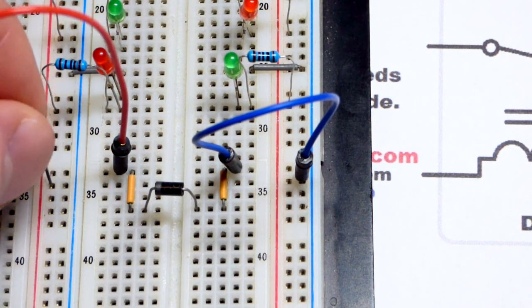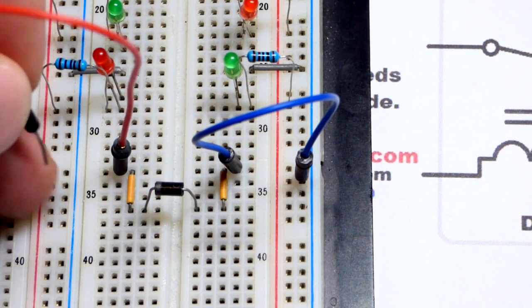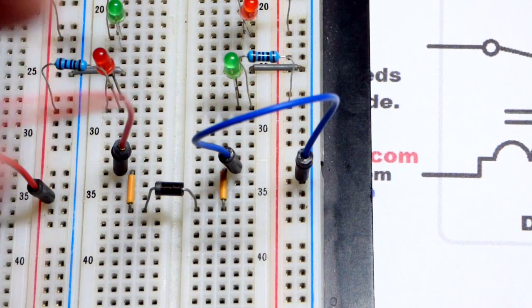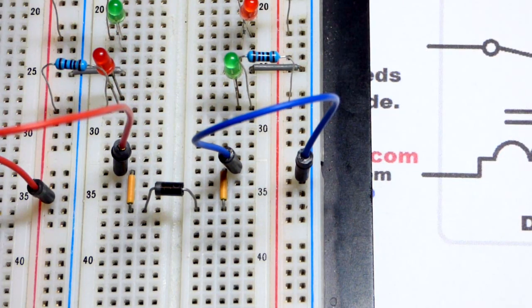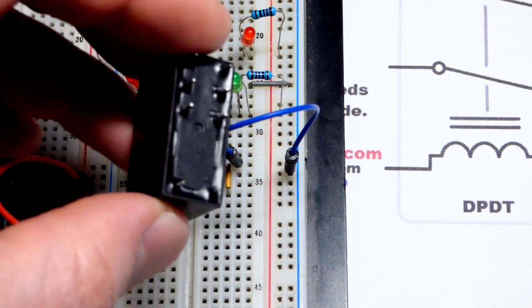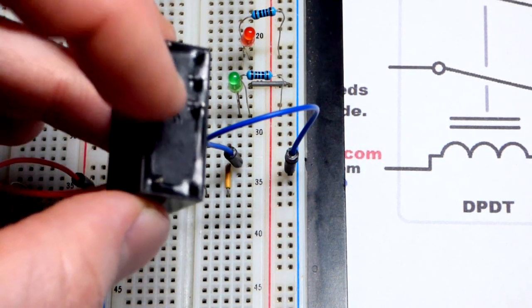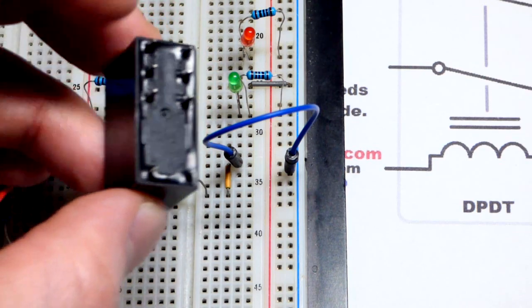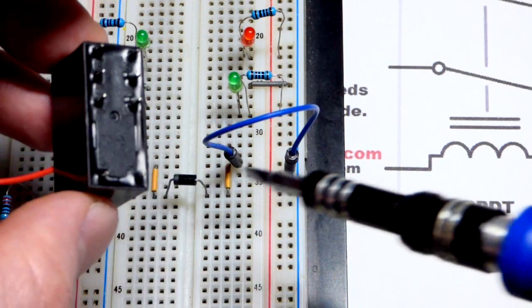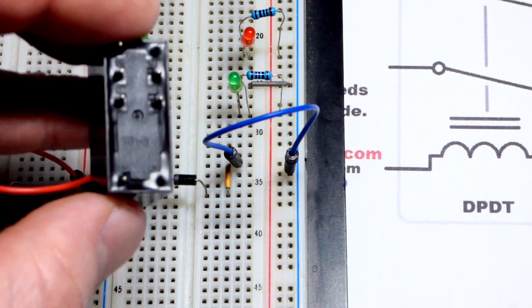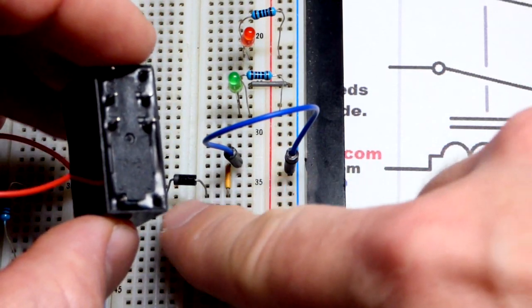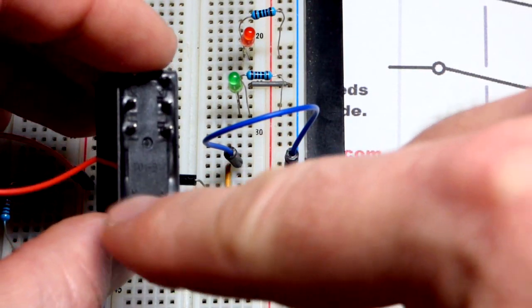So that's what the diode does. It prevents from when I yank this, from current continuing to flow between the gap there from a high voltage and maybe damaging something that can't take the high voltage. You want it to be wired so it's not conducting while it's powered, but it will conduct in the other direction when you yank the power.